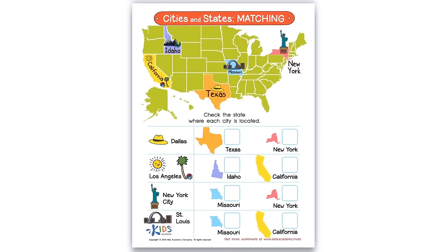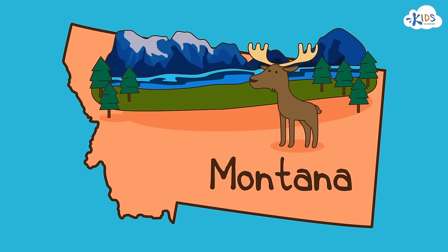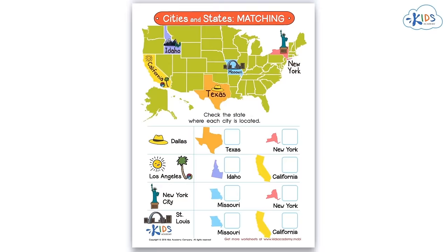Hello! Let's get started on the worksheet. Cities and states matching. There are 50 states in the United States of America. These states are divided into cities. It is easy to find a city when you know which state it is located in. Read the directions. Check the state where each city is located.